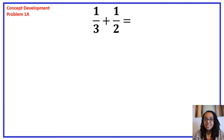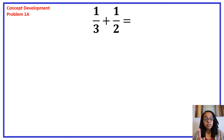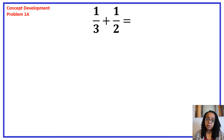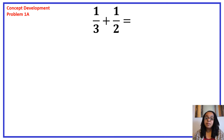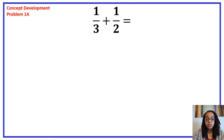Let's begin our concept development. Follow along on a blank piece of paper. The first problem is 1 third plus 1 half. The very first thing to notice is that the denominators are not the same. If the denominators are not the same, we can't just add them — we first need to find a common denominator. Different denominators are like different units, like apples and oranges or cats and dogs; you can't add them unless they're like units. So the first step is to find a common denominator.